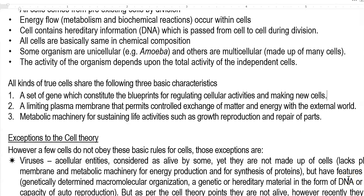The next points are related to the common basic characteristic features shared by all true cells. First, a set of genes which constitutes a blueprint for regulating cellular activity and making new cells will be present in all cells. These genes may be coded by DNA or RNA. DNA is commonly present in most organisms, while RNA is present in some viruses, serving as a blueprint for various cellular regulating activities.